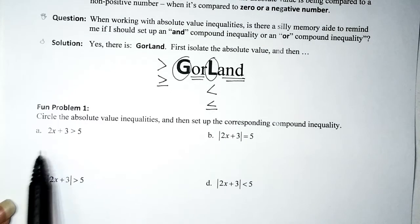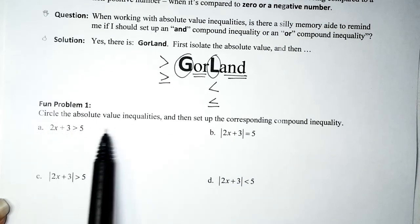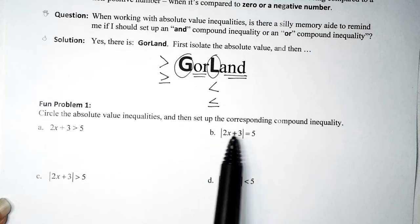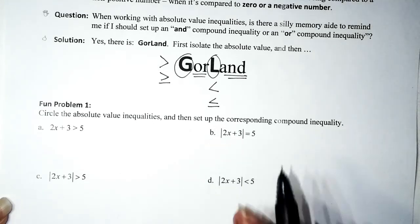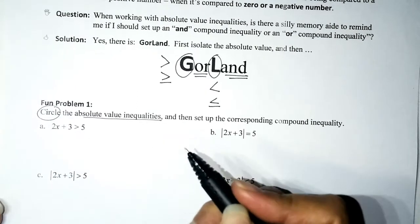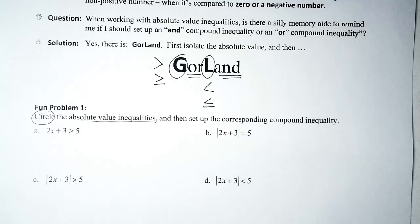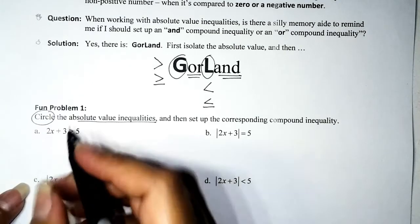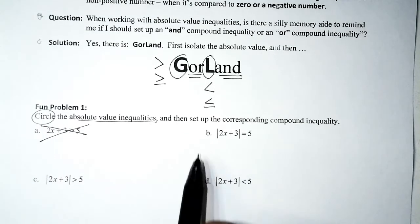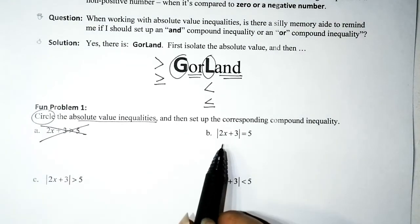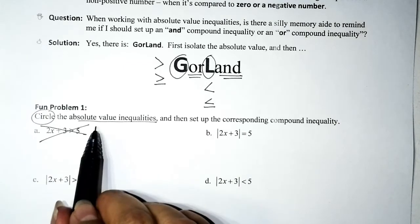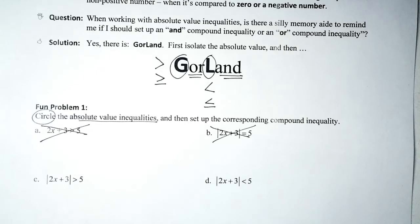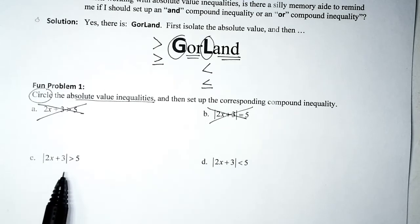Practice problem: the directions say to circle the absolute value inequalities and set up the corresponding compound inequality. Problem A has an inequality but no absolute value — cross it out. Problem B has an absolute value but no inequality symbol, so it's not an absolute value inequality.